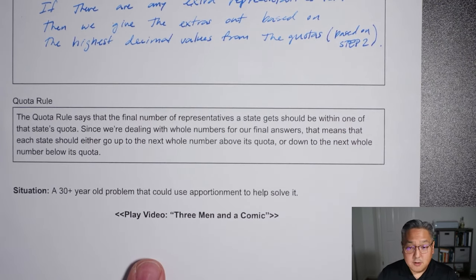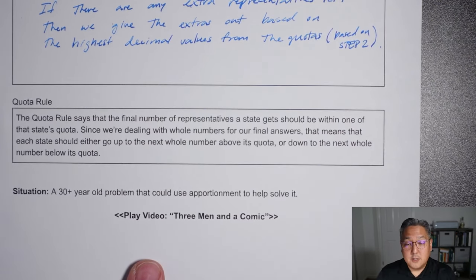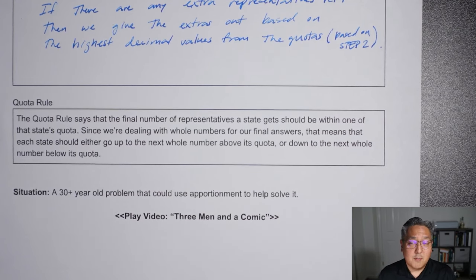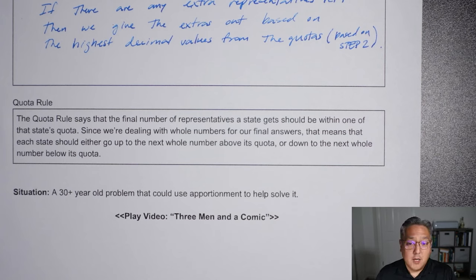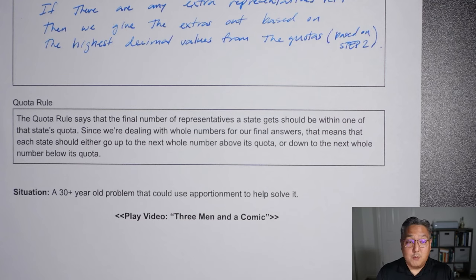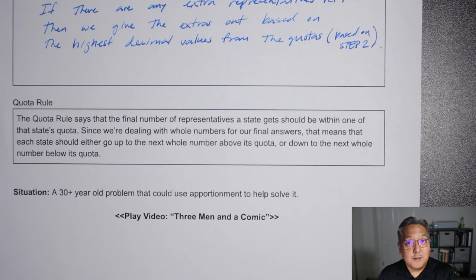Next, check out the video 'Three Men and a Comic Book' in the module below. Think about how the boys are sharing the comic book and what they're doing to determine who gets it, and what they may not have done to determine who gets time with it. Pay attention to how much money you think the boys paid into the purchase of that comic book. I'll see you in the next video where I have more examples of the Hamilton Method.